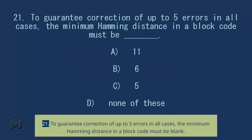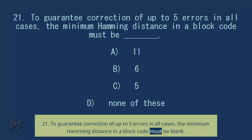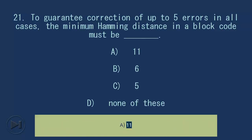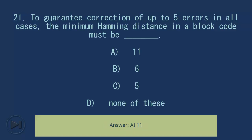Question 21: To guarantee correction of up to 5 errors in all cases, the minimum Hamming distance in a block code must be blank. A) 11, B) 6, C) 5, D) none of these. Answer: A, 11.